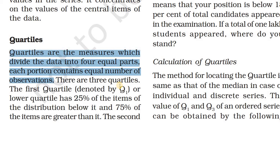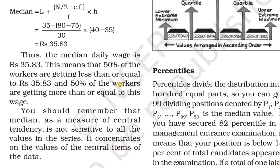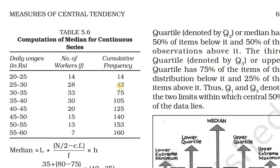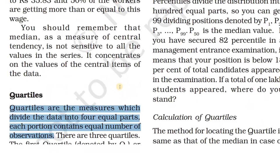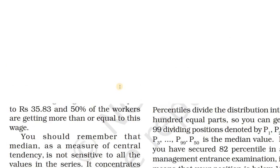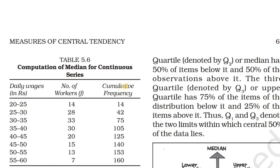There are three quartiles: Q1, Q2, and Q3. The lower quartile Q1 covers the first 25 percentage, and Q3 covers the first 75 percentage of the items. The second quartile is denoted by Q2 and that one is the median. Q2 is the median — it is the 50 percentage of items.